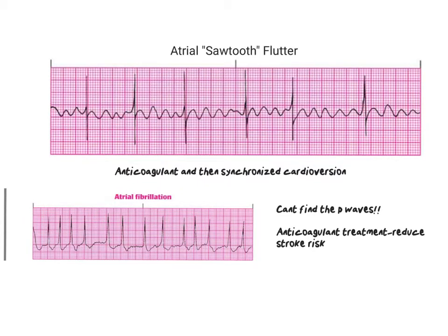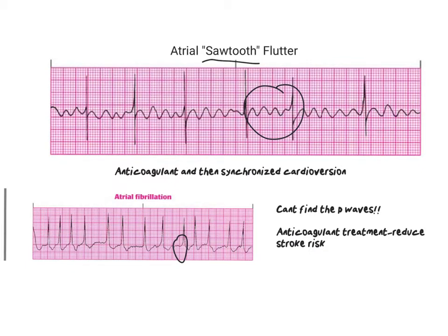This top one here is atrial flutter — you can see I put 'sawtooth flutter' because it kind of looks like a sawtooth. And then this is atrial fibrillation, where you can't find the P waves. I don't see any P waves. The treatment for both is very similar: we need to give anticoagulants and we need to perform synchronized cardioversion.